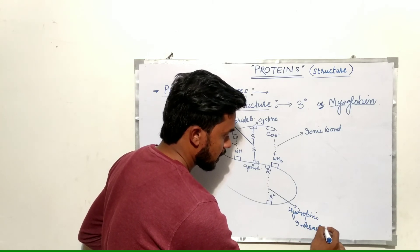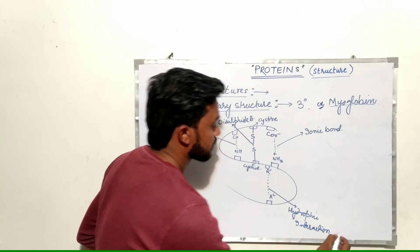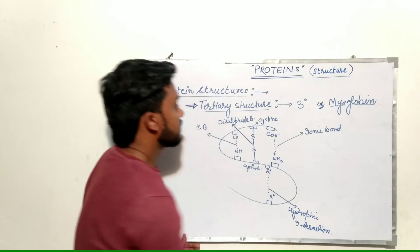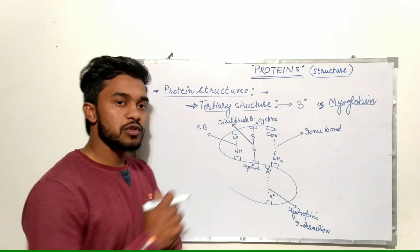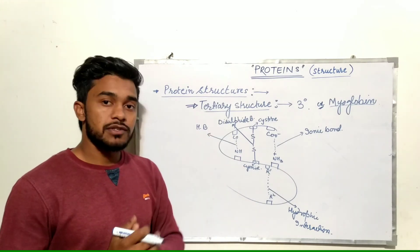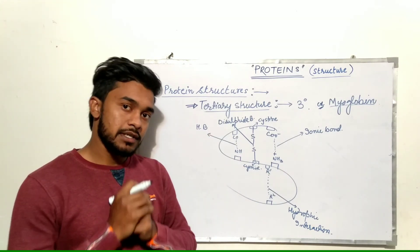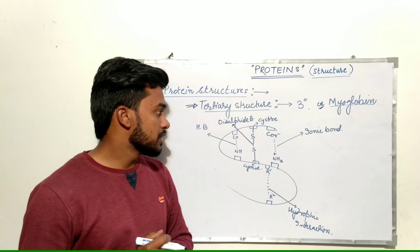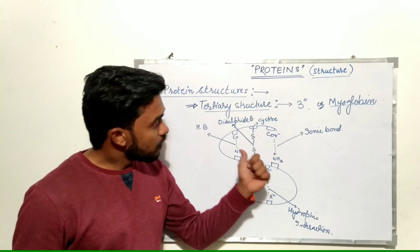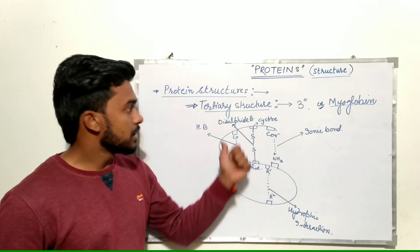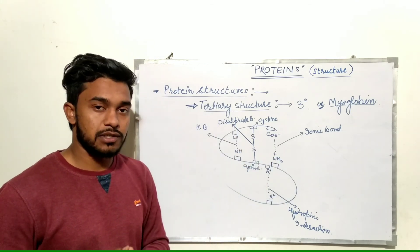So, many types of bonds are formed in the tertiary structure of proteins — hydrogen bonds, disulfide bonds, ionic bonds, and hydrophobic interactions. This is how the different types of bonds are formed in tertiary structure.